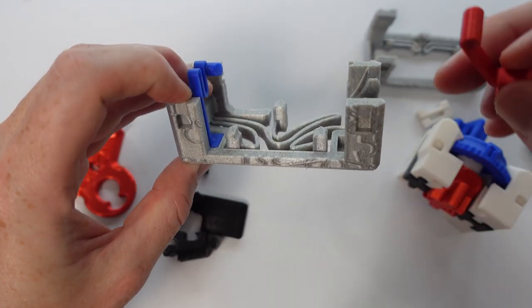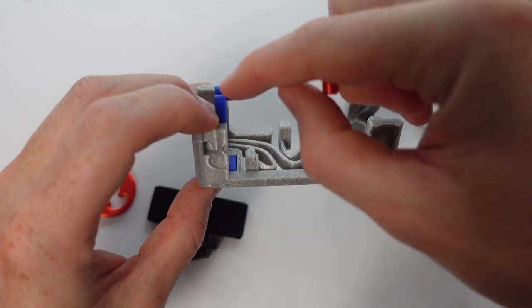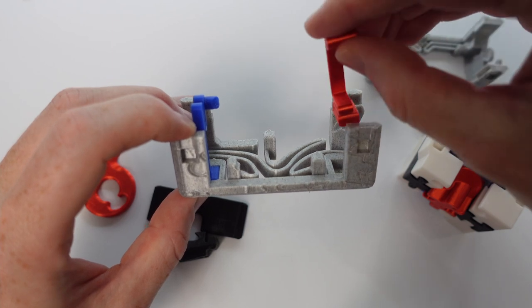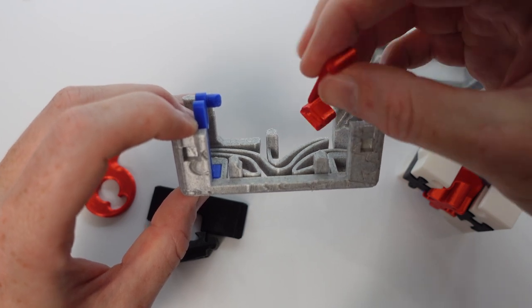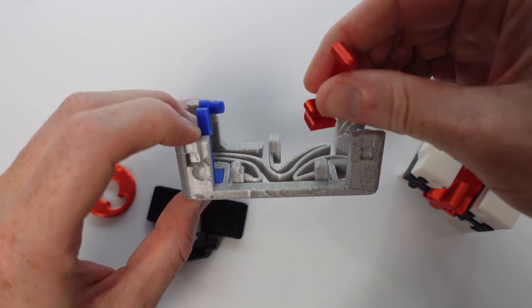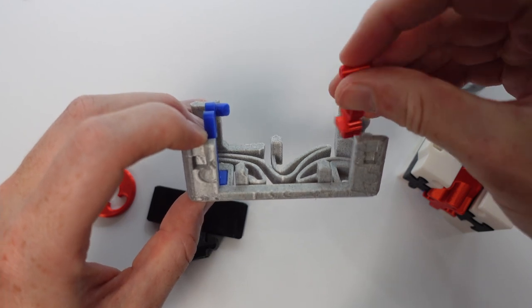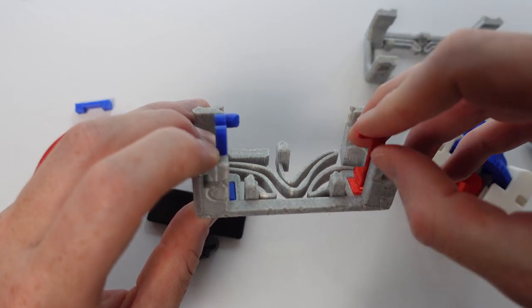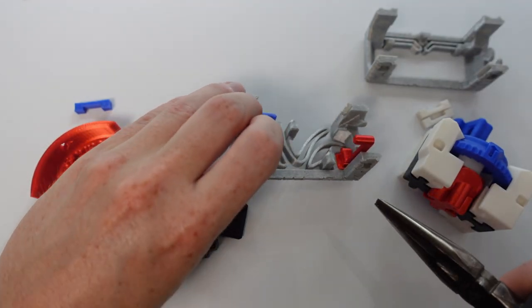Now we're going to do the same for the sixth spring. Make sure that the posts are facing inward as you're assembling this. You want that top post facing inward, and then use pliers to get that nice and tight.